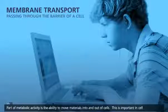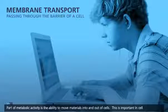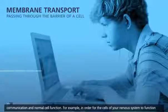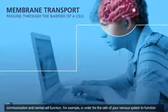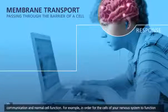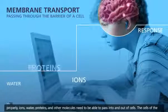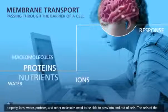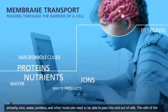Part of metabolic activity is the ability to move materials into and out of cells. This is important in cell communication and normal cell function. For example, in order for the cells of your nervous system to function properly, ions, water, proteins, and other molecules need to be able to pass into and out of cells.